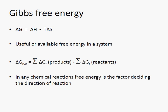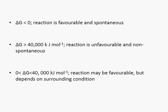In the same way, if the ΔG value is positive, the reaction is unfavorable and reactant formation is favored — that is, the backward reaction. The terminologies in this slide explain the spontaneity of the forward reaction: if ΔG is less than zero, the forward reaction is favorable; if ΔG is greater than 40,000 kilojoules or more, the reaction is unfavorable. If the ΔG value lies in between this range, the nature of the reaction depends on surrounding conditions, which may provide energy to make the reaction favorable.